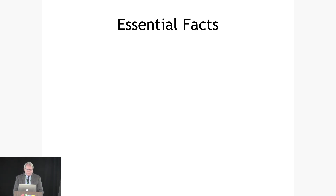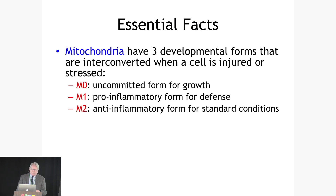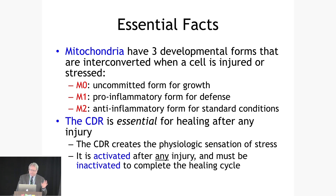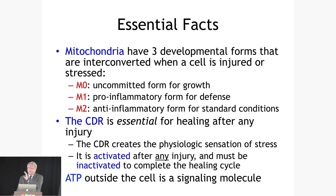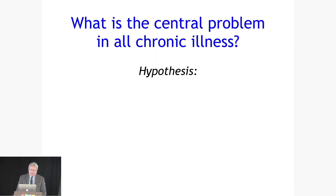These are the three developmental forms of mitochondria: M0 or uncommitted, M1 or pro-inflammatory, M2 or anti-inflammatory. The CDR is essential after every injury. ATP is an energy molecule inside the cell, but outside the cell it is a danger-associated molecular pattern — some people call it a DAMP — but it's a signaling molecule.